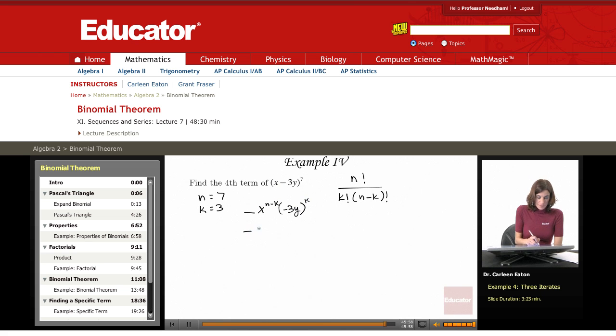This is going to become x to the 7 minus 3 minus 3y to the 3. Therefore, I'm going to get some coefficient that I'm going to find in a moment, times x to the fourth times negative 3y cubed.